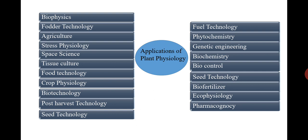Phytochemistry is the science in which different types of chemicals present in the plant are studied. With the help of plant physiology, we become aware about phytochemistry.